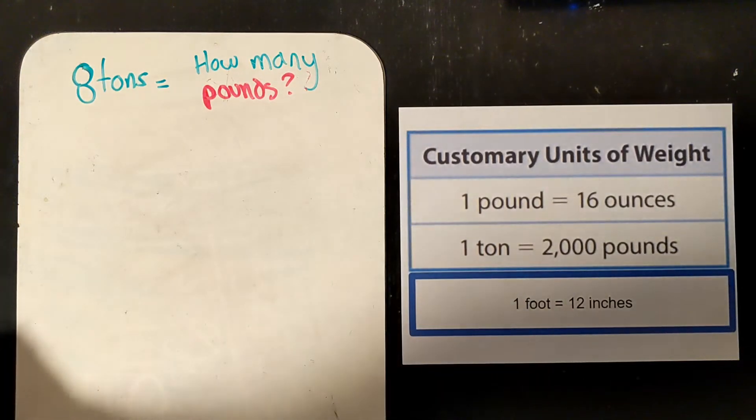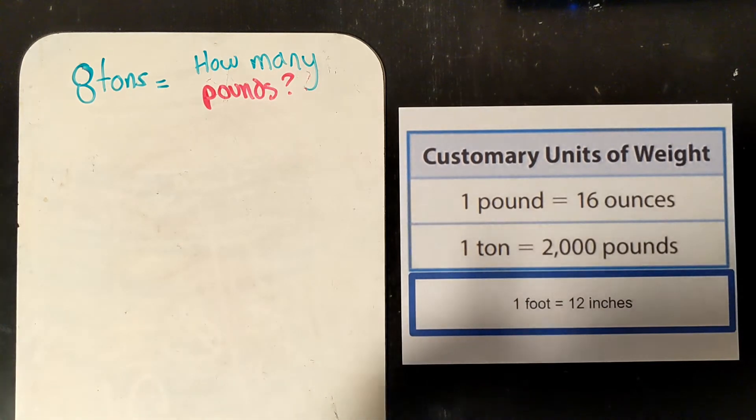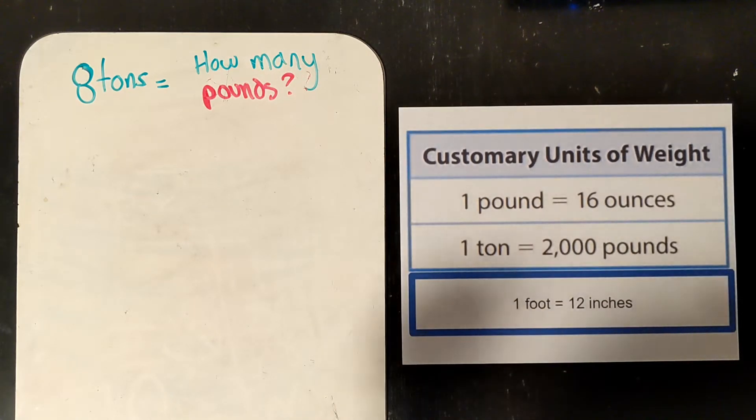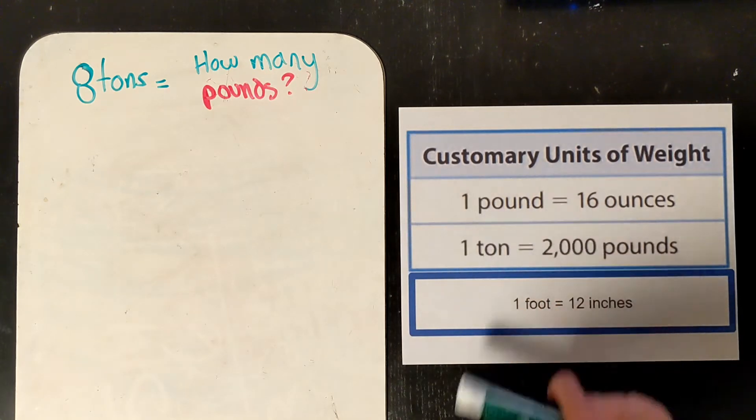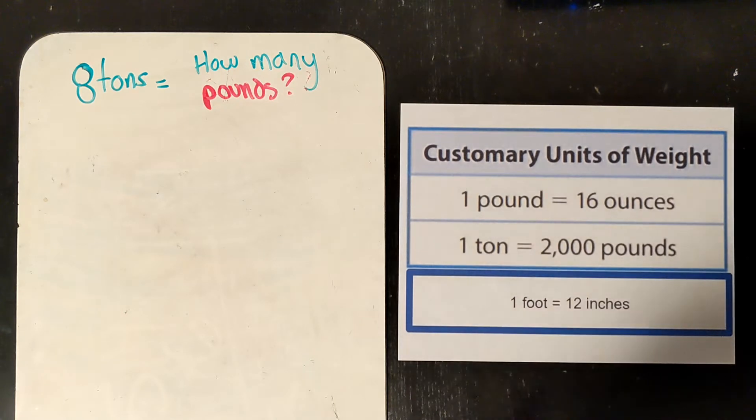All right, we are working with converting between measurements. We did time, so if I said how many minutes are in 5 hours, you would do 5 times 60. And now we're going to do the same thing, but with weight. So we'll be converting between pounds and ounces, tons and pounds, and feet and inches.